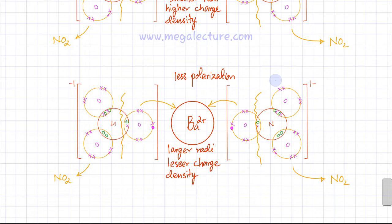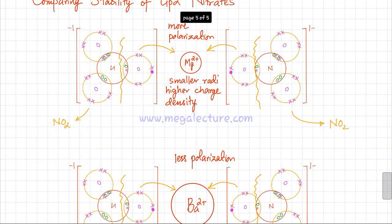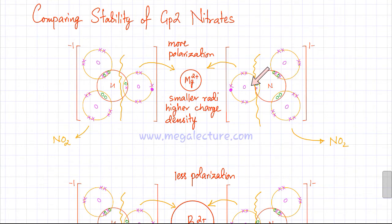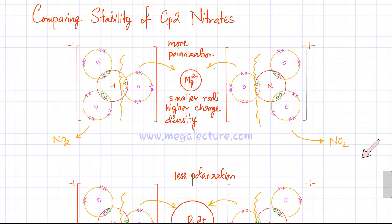What this means is that magnesium nitrate is going to be much more unstable. The nitrate ion will decompose because the electrons are strongly attracted to Mg²⁺, causing an oxygen to join with the magnesium while NO₂ breaks away. So it is much easier to decompose magnesium nitrate compared to barium nitrate.